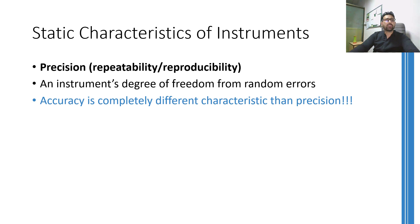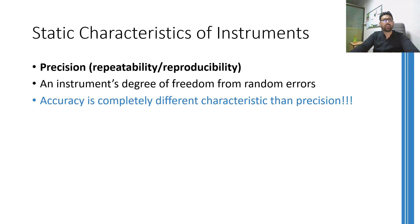The next important characteristic is precision. Precision means how much deviation there is in the output when the system is operated again and again. To clarify this, let's take a simple example of your handwriting. Can you write the letter A again and again so that it looks exactly similar? If you write letter A 50 times, the more variations you have in your writing style, the less precise you will be called.